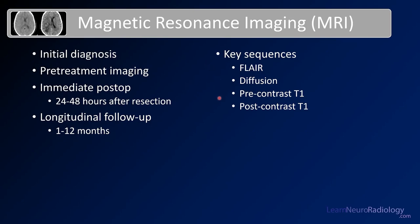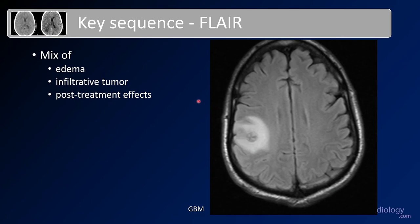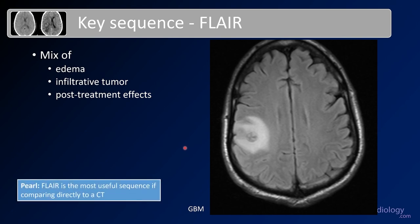Key sequences obtained every time include FLAIR, diffusion, and pre- and post-contrast T1. FLAIR is a really key sequence — here you see a FLAIR image on the right of the screen showing a mix of edema and infiltrative tumor, and you can also see post-treatment effects like gliosis from radiation therapy. The enhancing part of the tumor is surrounded by hyperintense FLAIR signal, which is a combination of vasogenic edema and infiltrative tumor. FLAIR tells you the extent of the abnormality, how much brain is involved, and how much overall swelling there is. FLAIR is the most useful sequence to compare directly to CT — it's kind of the inverse, since water is brighter on FLAIR but darker on CT.